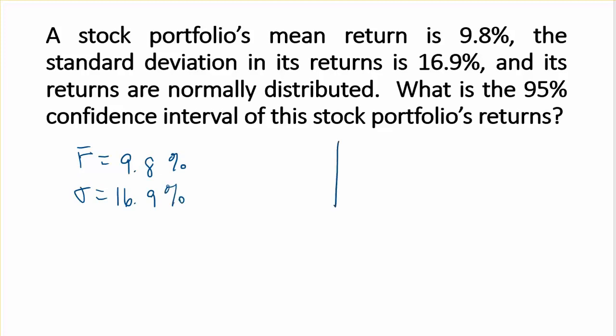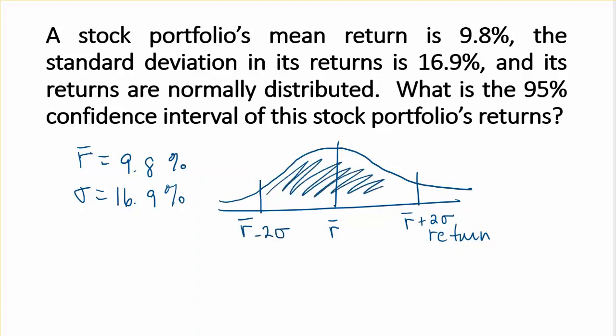Assuming the returns follow a normal distribution. A probability density function when returns are normal will always have this property that if you go out two standard deviations from the mean, subtracting two standard deviations or adding two standard deviations, the probability represented by the area under the curve will be 95%.